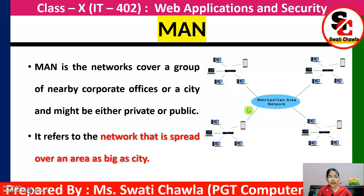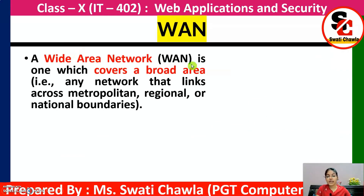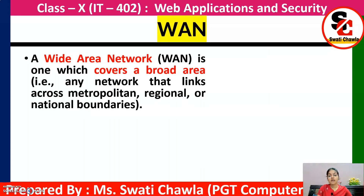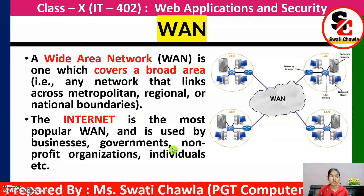Last is WAN — Wide Area Network. A wide area network covers a broad area — any network that links across metropolitan areas, outside the city. The internet is an example of WAN and is used by businesses, governments, non-profit organizations, individuals, etc. So: PAN is very small, LAN is within a building, MAN is within a city, and WAN is all over the world.